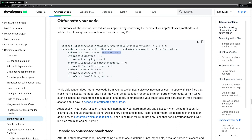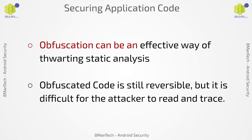In this example, the context field has been renamed to 'hey', and the boolean field M show title has been renamed to capital P. Obfuscation can be an effective way of thwarting static analysis. Obfuscated code is still reversible, but it is difficult for the attacker to read and trace.